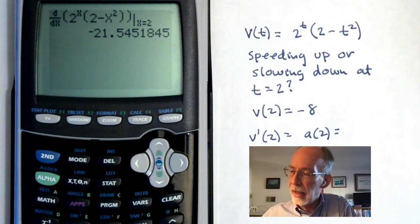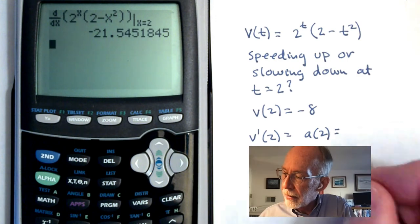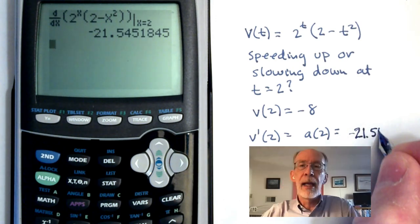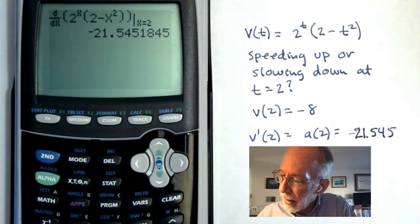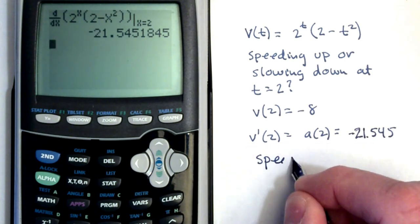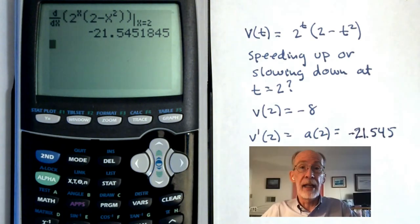And we get that the acceleration at time 2 for this particle is negative 21.545. And so the velocity and the acceleration are identical in sign. And so the particle is speeding up. That's all you need to know.